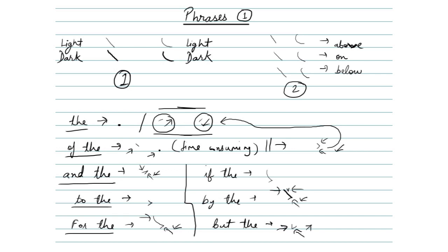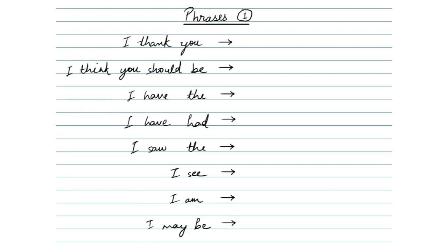Now let's begin with the phrases. First we have 'I thank you', so here we use this. Next we have 'I think you should be', so here we use this. Next we have 'I saw the', so here we use this. Next we have 'I have had', so here we use this. Next we have 'I will', so here we use this. Next we have 'I may be', so here we use this.